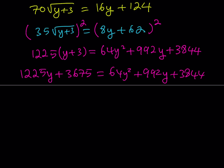Distributing gives 1225y plus 3675 equals 64y squared plus 992y plus 3844. Putting everything on the right side to form a quadratic: 64y squared minus 233y plus 169 equals 0, since 992 minus 1225 is negative 233 and 3844 minus 3675 is 169.